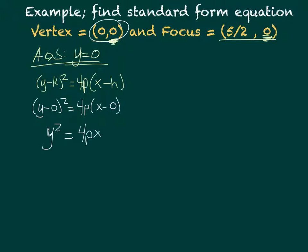That's our standard form equation, except we need to find p. Because we have our focus, we know that has something to do with p. In the standard form of a horizontal parabola, the focus equals (h+p, k). We know h and k, so I'll put that in: (0+p, 0).